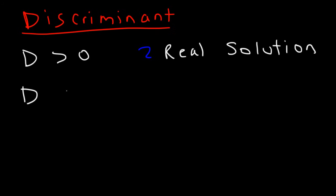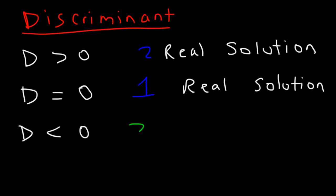If the discriminant is equal to zero, then there's going to be only one real solution. If the discriminant is negative, or if it's less than zero, then there's going to be two imaginary solutions.